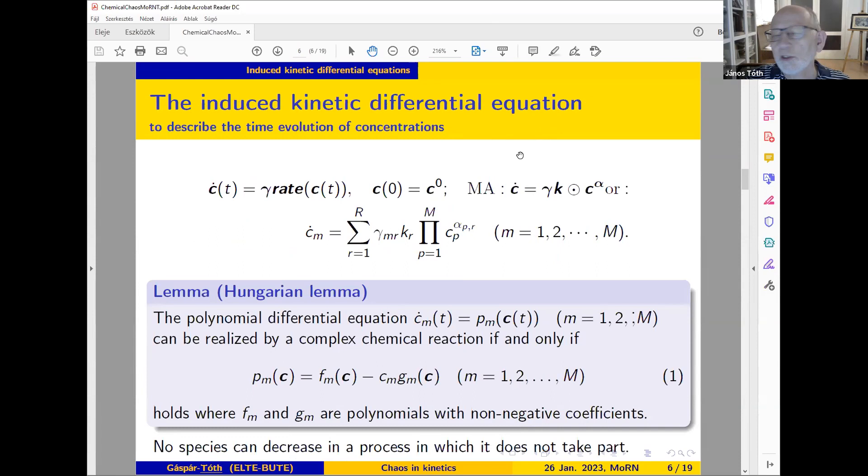We are interested in the time evolution of concentrations, and we have an equation like this, where gamma is the stoichiometric matrix and we assign rates to all reaction steps with an initial condition. In most cases, we use mass action type kinetics, which means the equation has a very special form. Here you can see the role of gamma, the stoichiometric numbers, and here you have monomials of the concentrations with positive reaction rate coefficients characteristic of individual reaction steps.